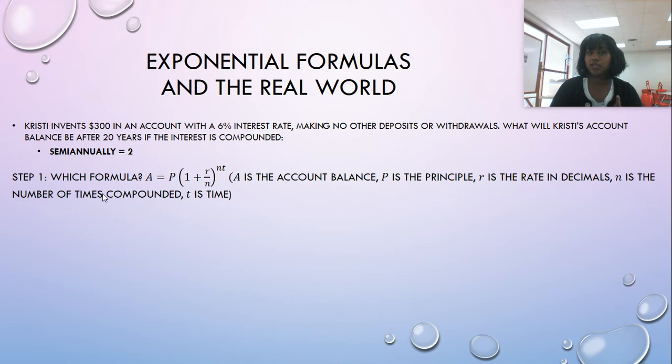The biggest mistake I see with kids with this question, even though it should be the easiest question on a test, they put six or 0.6, and they get a vastly larger number than they should have gotten. N is the number of times, so semi-annually is n, and t is the number of years that you're checking after. So in this instance, we're doing it for 20 years from now. So I put $300 in today, and 20 years from now I check on it, how much money am I going to have in that?